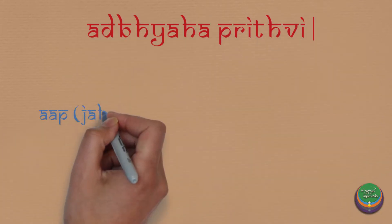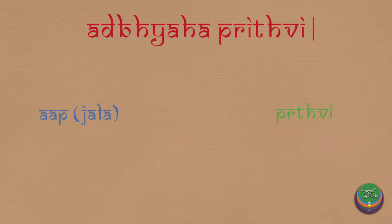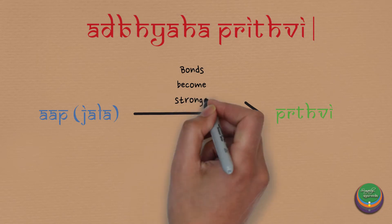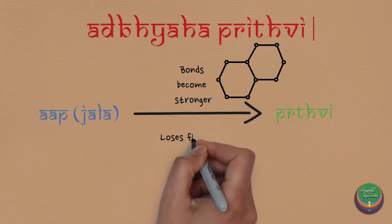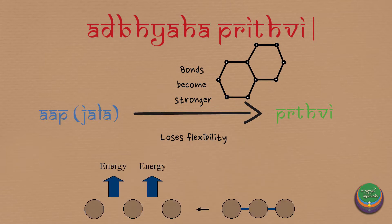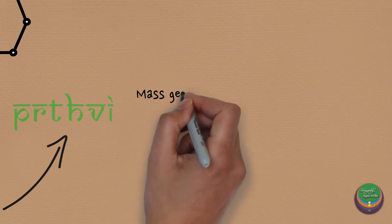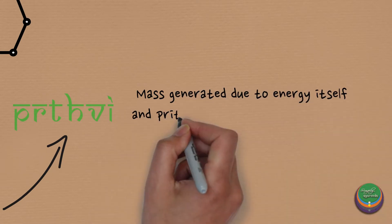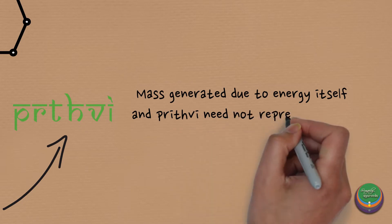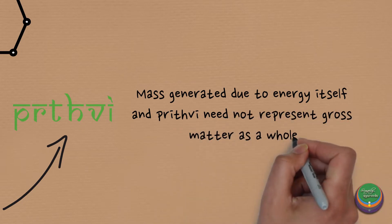Prithvi is produced when the bonds holding the previous Mahabhuta — which is Jala — start becoming stronger. Hence, Jala loses its prime character of flexibility. The dense cohesive bonds release energy which generates mass, and this mass is what we call the Prithvi Mahabhuta. In simpler terms, Prithvi is the mass generated due to energy itself, and Prithvi need not represent gross matter as a whole.